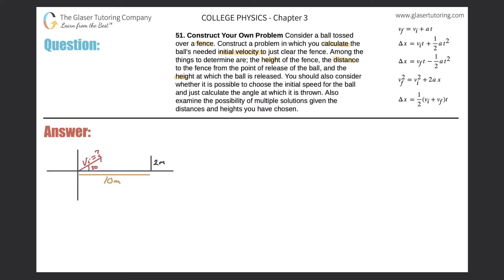So let's say here's a fence, and it's located approximately 10 meters away from the point of release. The point of release is essentially two meters lower than the height of the fence, so the height of the fence is two meters. I have given you the initial angle of release of this ball, and what we are to do is calculate the initial velocity.